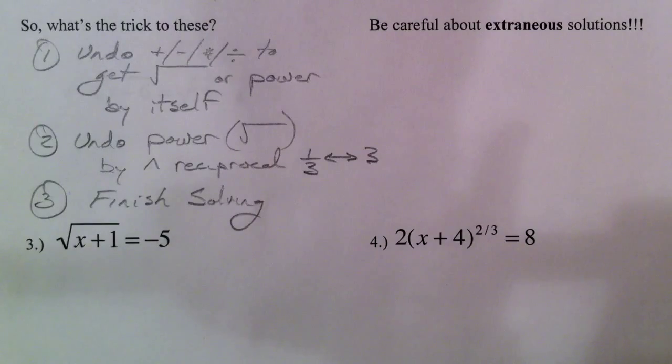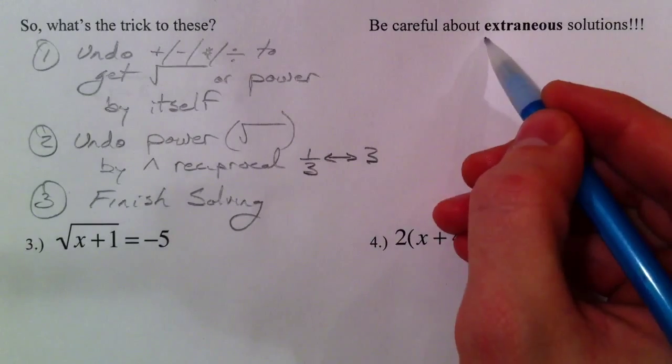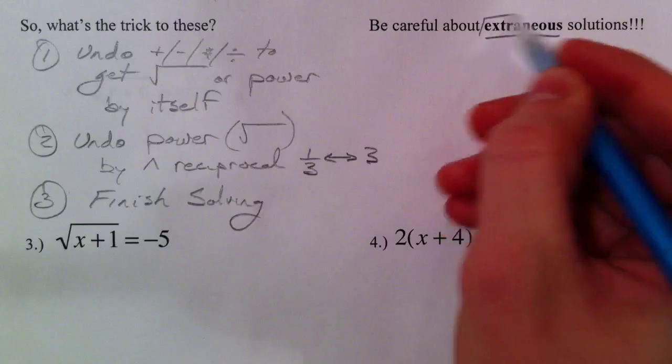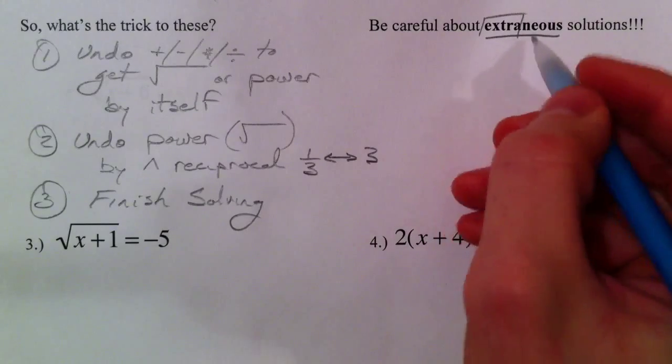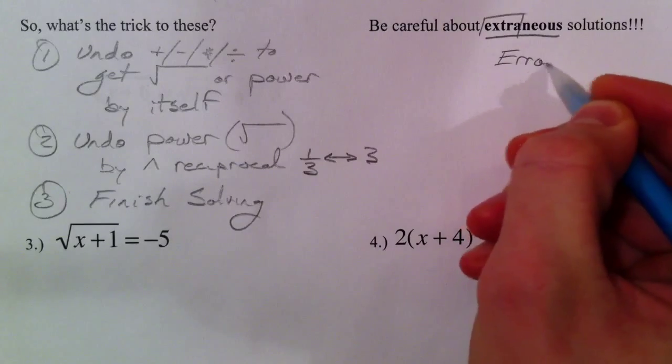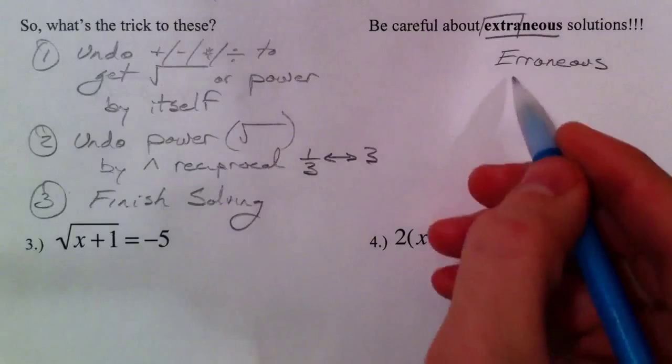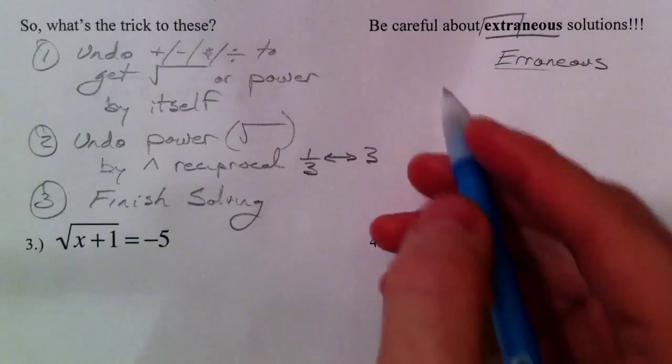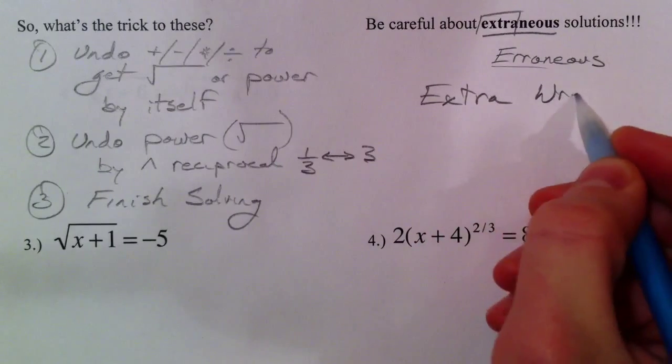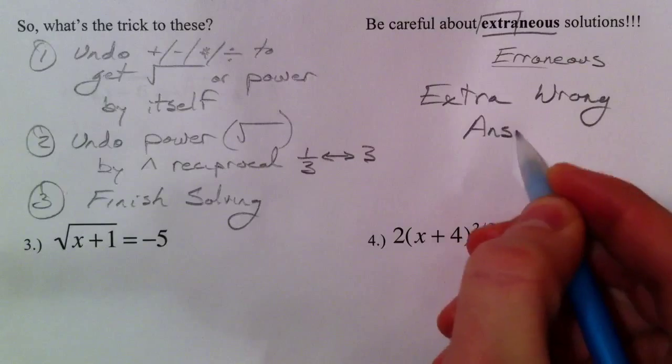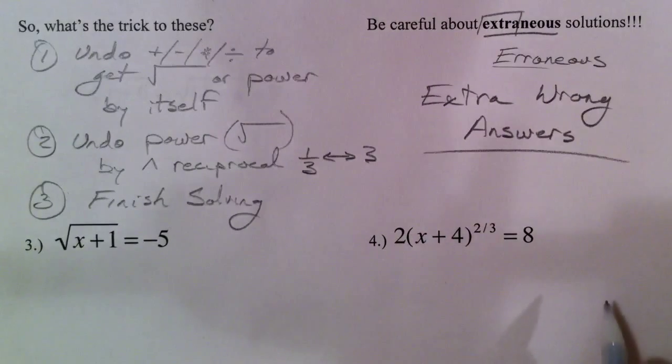So before I said it, it's very important to check your answers. The reason being is we get these things called extraneous solutions. So two key things here, we've got extra, and then the other part is the word erroneous, which is a big fancy word for error. And so we get extra, wrong answers. And so it's a very unfair process, because funny things happen when you square both sides, because when you square both sides, you get rid of negatives. And so these extra answers come up, because that's what you're forced to do in solving the equation, but you have to check it, because it may not be an answer after all.